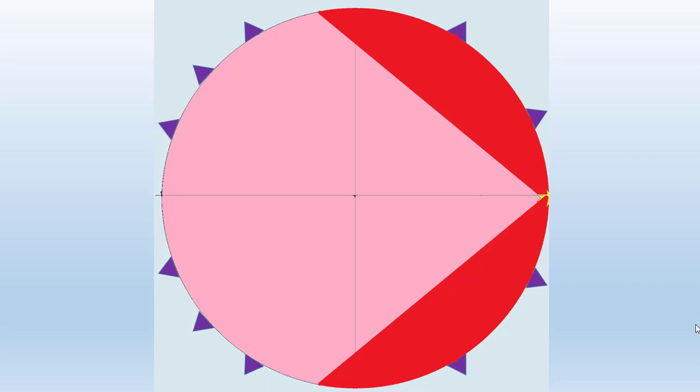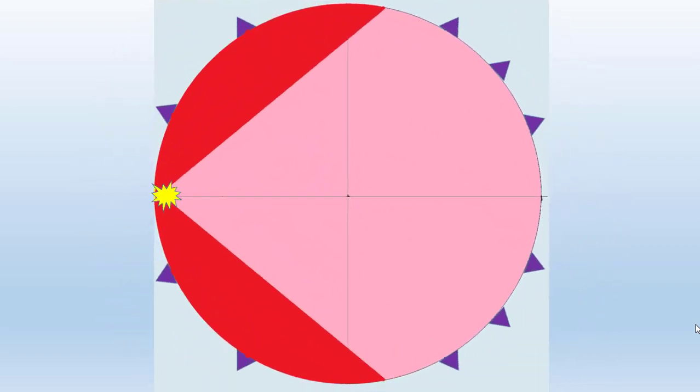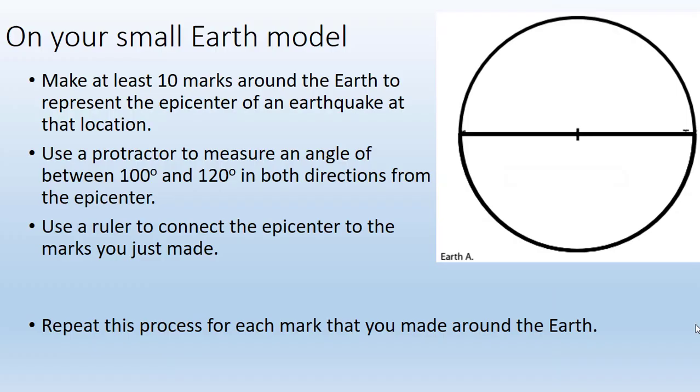But wait, where does the new substance end? Does it go all the way over to the other side's surface? What if we had an earthquake on the other side of the Earth? Our data would show us the same thing, just from the other side. So we need to narrow down a little bit that area that we just decided was not solid rock.